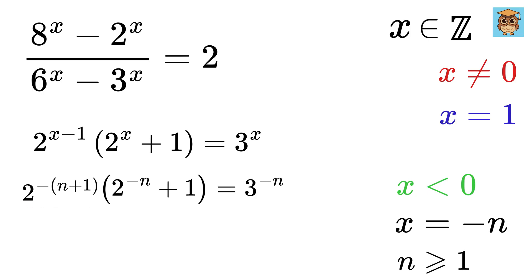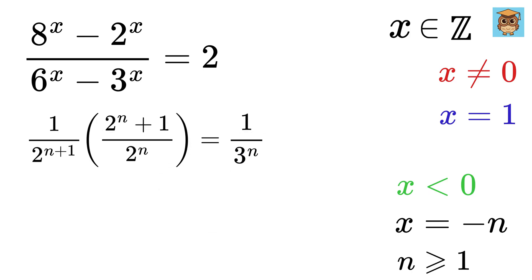This will become 2 to the minus n plus 1 or 1 over 2 to the n plus 1. This will be 1 over 2 to the n plus 1 or 2 to the n plus 1 over 2 to the n. And right side will be 1 over 3 to the n. So this will be 2 to the n plus 1 divided by 2 to the 2n plus 1 equals 1 over 3 to the n.